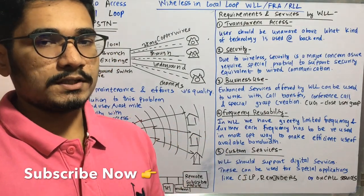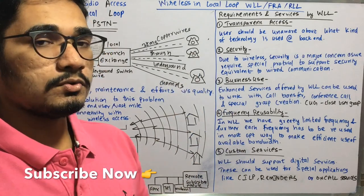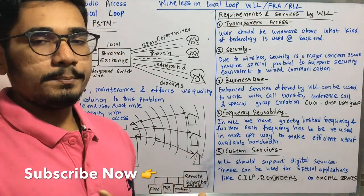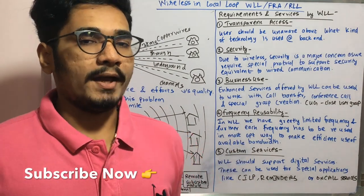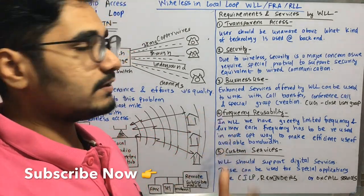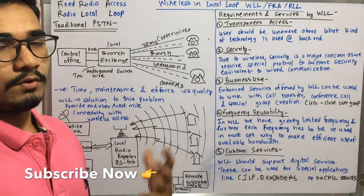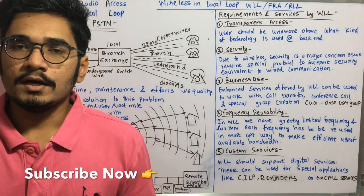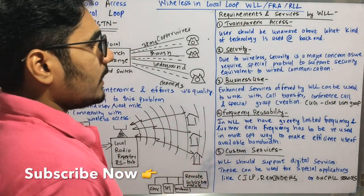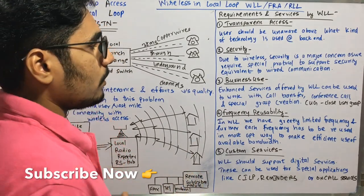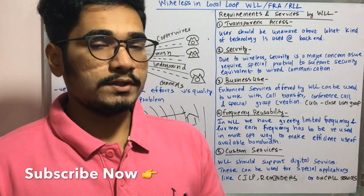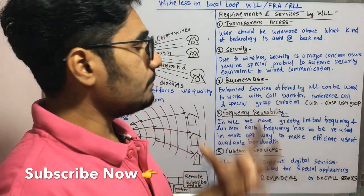There are some service requirements expected from WLL. The first requirement is transparent access — the user should be unaware of the kind of technology used at the back end; they should never know what mechanism is used to do the communication. Next is security. When we remove the wire, security becomes a challenging part. Due to wireless, security is a major concern, and we require a special protocol to support security equivalent to wired communication.